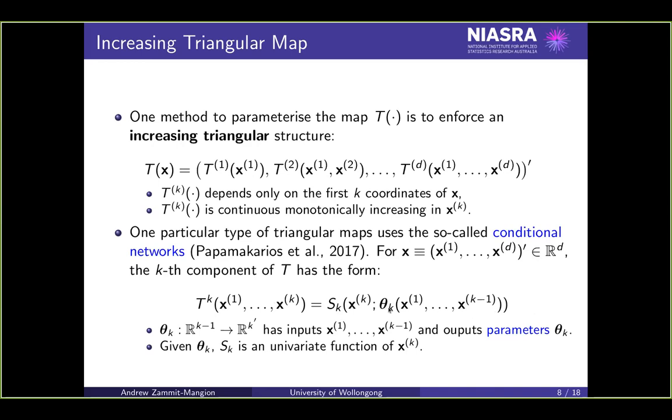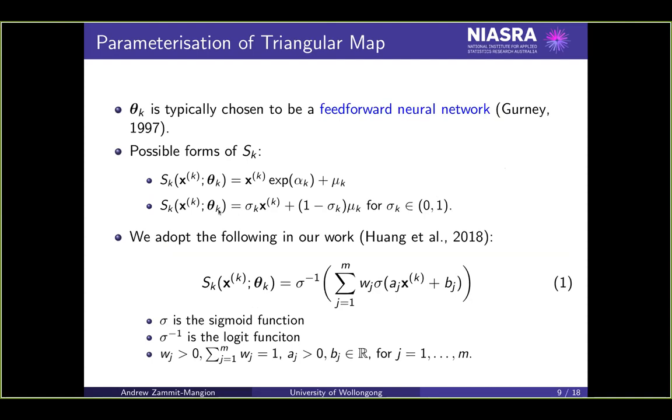That is where the neural network comes in. So theta K as a function of the other variables would be modeled using a neural network. There are many neural networks here. You'd need a neural network for each dimension, and you'd need an output for each parameter within these SKs. Just to show you some of the popular SKs used in these settings, this is the straight line: xK times e to the alpha K. Here we're coercing the gradient of the line to be positive, plus some intercept. This is monotonically increasing in xK for every value of alpha and mu. Alpha and mu would be functions of the other dimensions via the neural network.